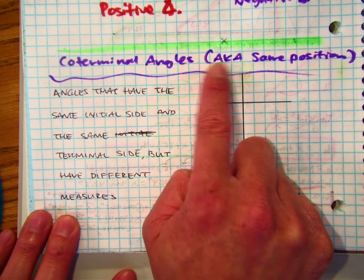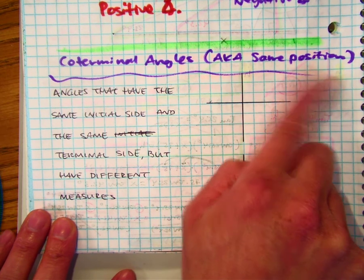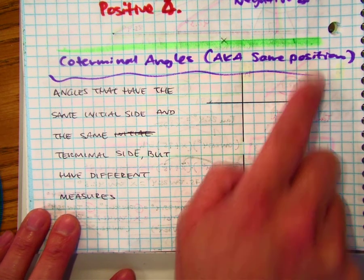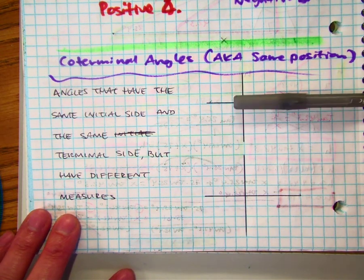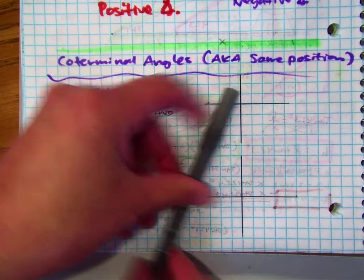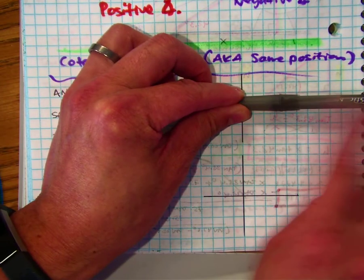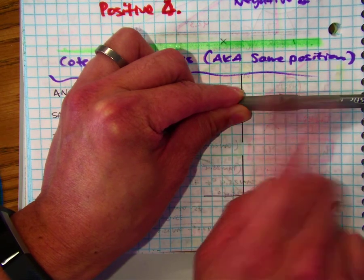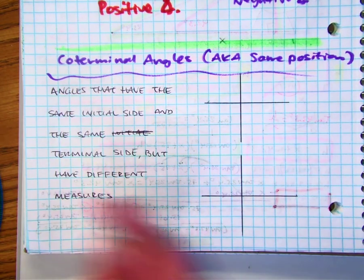Coterminal angles, also known as same position. So I just showed you guys a graphic where basically we started on the initial at zero degrees and I did a full rotation of a positive angle and ended up in the same position at 360 degrees. That's called coterminal angles.